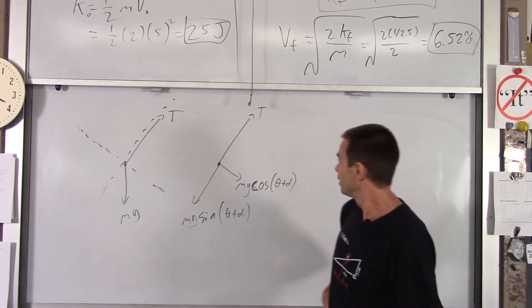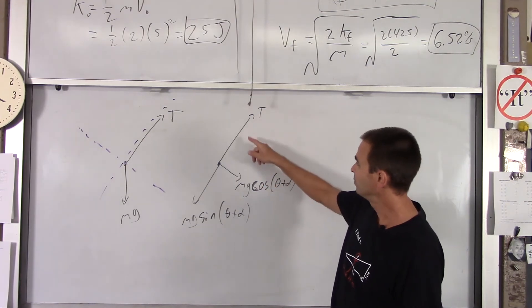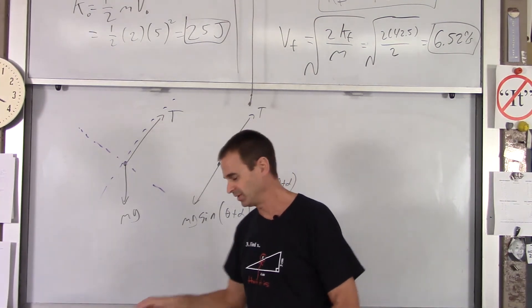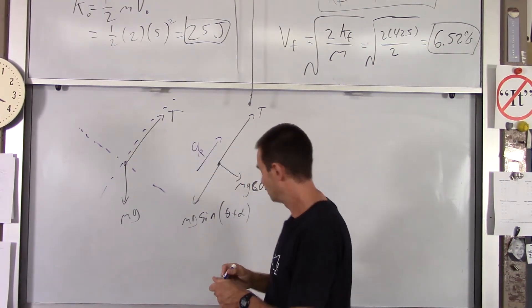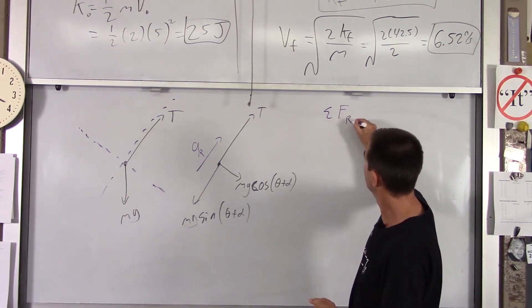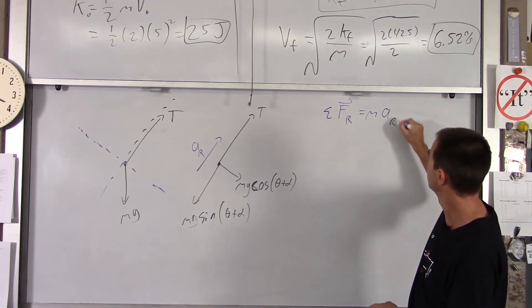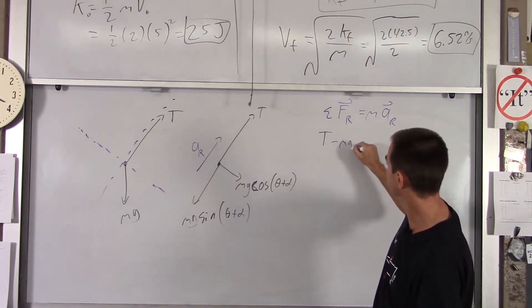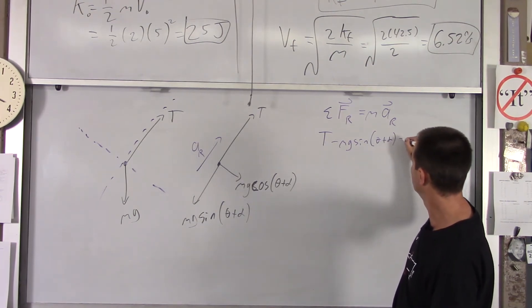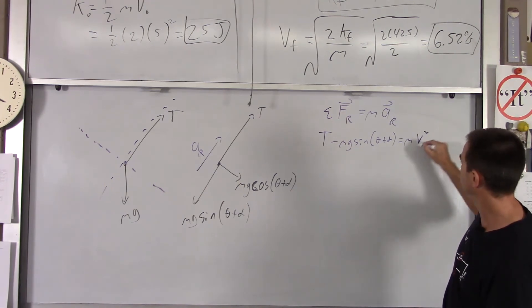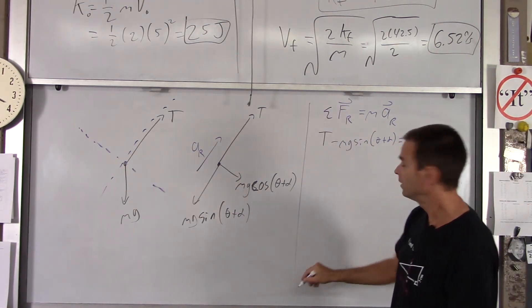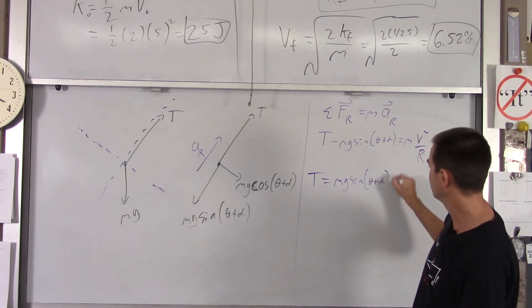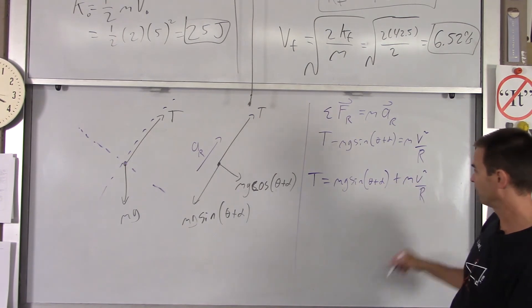All right, so a common error that people make is they say tension equals this component of gravity. And that would be true if the pendulum bob were stationary, but it's moving in a circle. So it is accelerating inward with some radial acceleration. So I do net force in the radial acceleration or in the radial direction equals MAR. The net force, well, you do toward the center of the circle's positive. So it's tension minus mg sine of theta plus alpha equals M. And then AR is V squared over R. So your tension is actually bigger than this. You end up with the following. You get mg sine of theta plus alpha plus MV squared over R. So that's the magnitude of your tension.